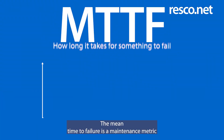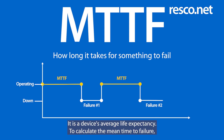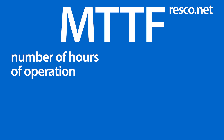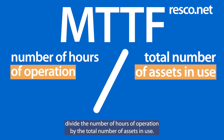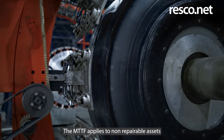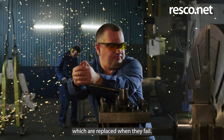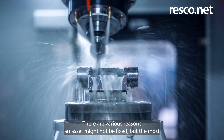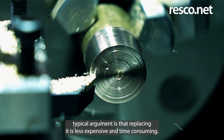The mean time to failure is a maintenance metric that indicates how long it takes for something to fail. It is a device's average life expectancy. To calculate the mean time to failure, divide the number of hours of operation by the total number of assets in use. The MTTF applies to non-repairable assets, which are replaced when they fail. There are various reasons an asset might not be fixed, but the most typical argument is that replacing it is less expensive and time-consuming.